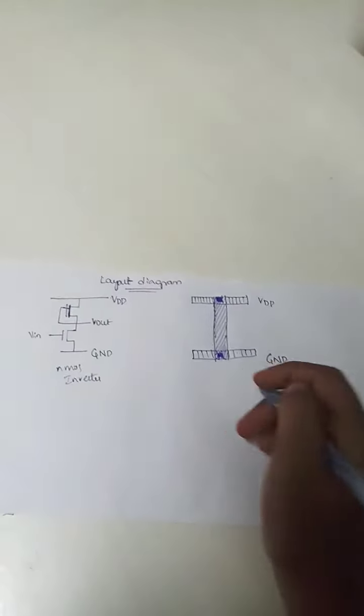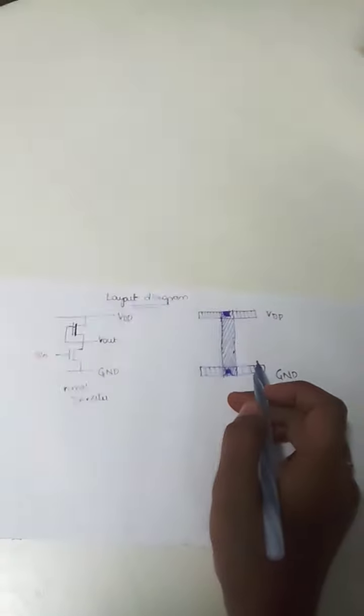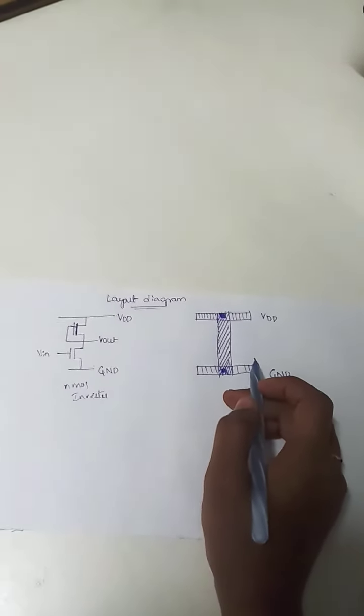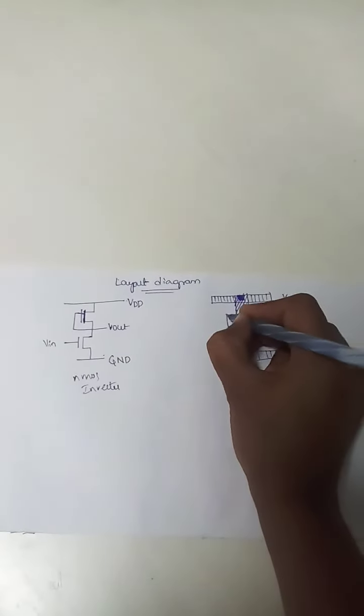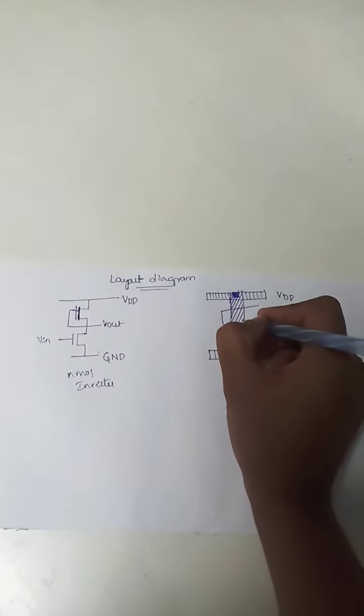Now, to make a transistor, you have to make a cross with diffusion. That is, polysilicon has to make a crossover with diffusion. In the similar way, you have drawn for the stick diagram. Represent it the same way.